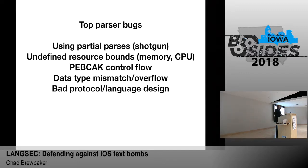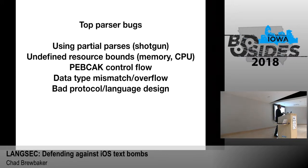The top parser bugs: using partial parsers — getting about halfway done and saying it's close enough without waiting for the full thing to parse. Not defining resource bounds — your parser should only use so much memory and CPU cycles, or else say error. The unRAR bug in the Microsoft Defender problem was a type mismatch between signed and unsigned integers — so anytime you're taking a parse result and throwing it into a variable, make sure you type-check it. And bad language and protocol design from the start, especially with network protocols where there's an actual defect in the design, not necessarily our code.